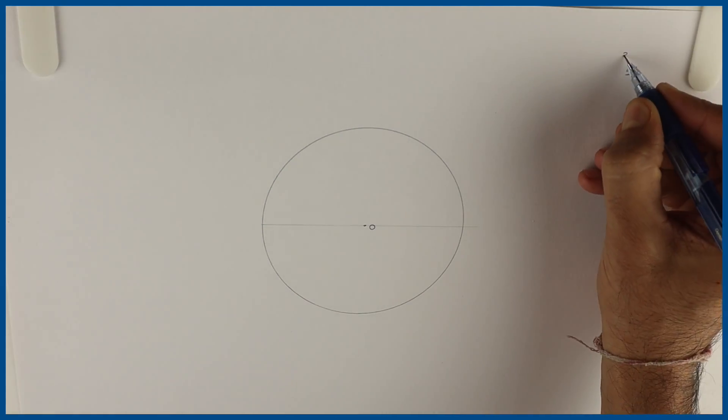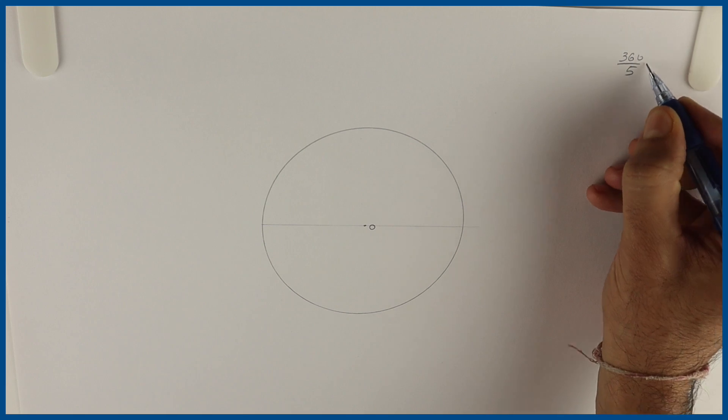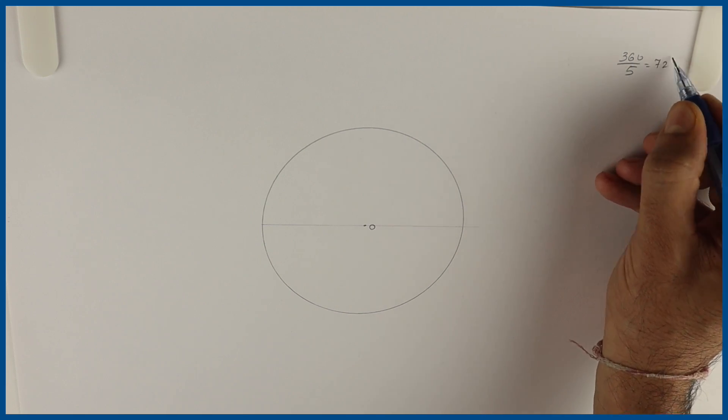Now we need to draw a pentagon around a circle. So 360 divided by 5 would be how much? 72 degrees.